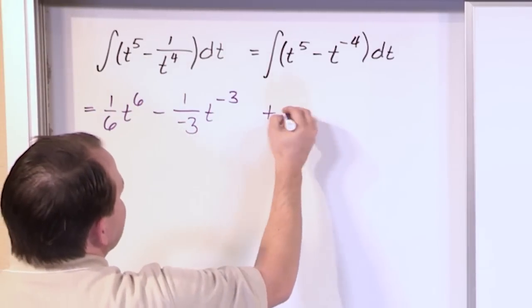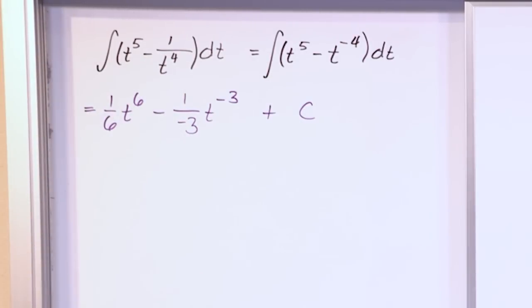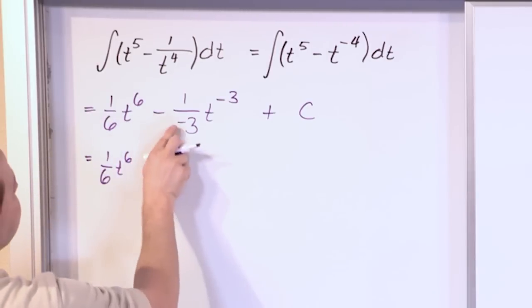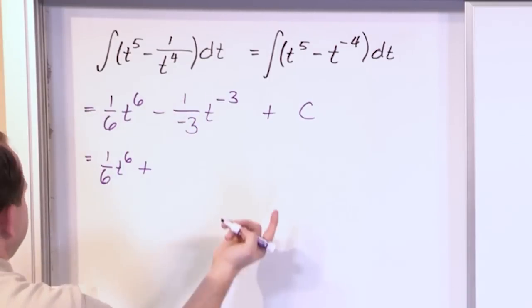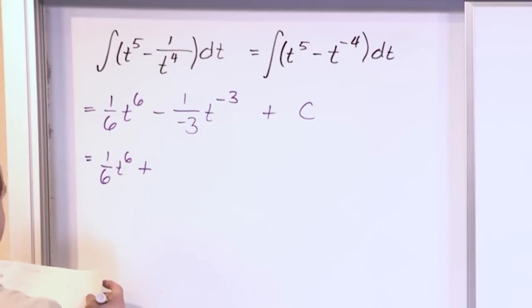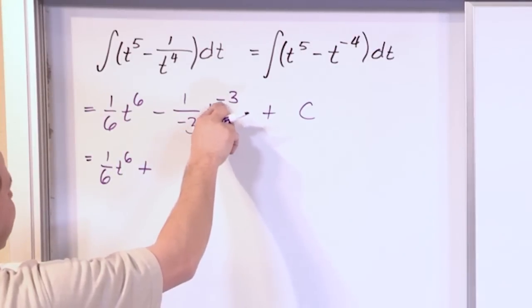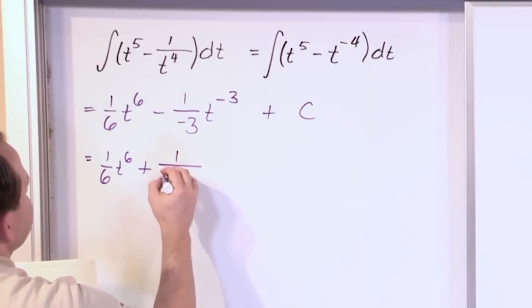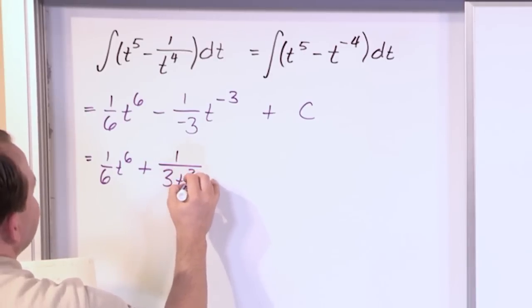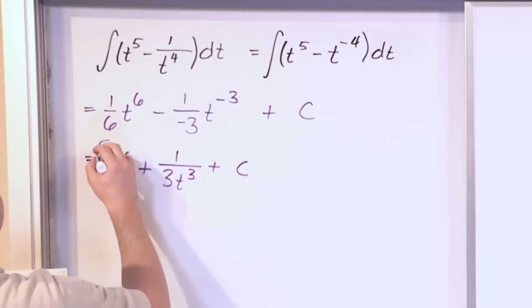Now this is an indefinite integral, so we always have a constant, an arbitrary constant of integration. So simplifying this further, it would be 1 sixth t to the 6th power. This double negative gives you a positive, and then we have 1 third, right? So we have 1 third, but this t cubed, this negative t to the negative 3, can then be moved back downstairs if I want. 1 over 3t cubed plus a constant, and this is the answer.